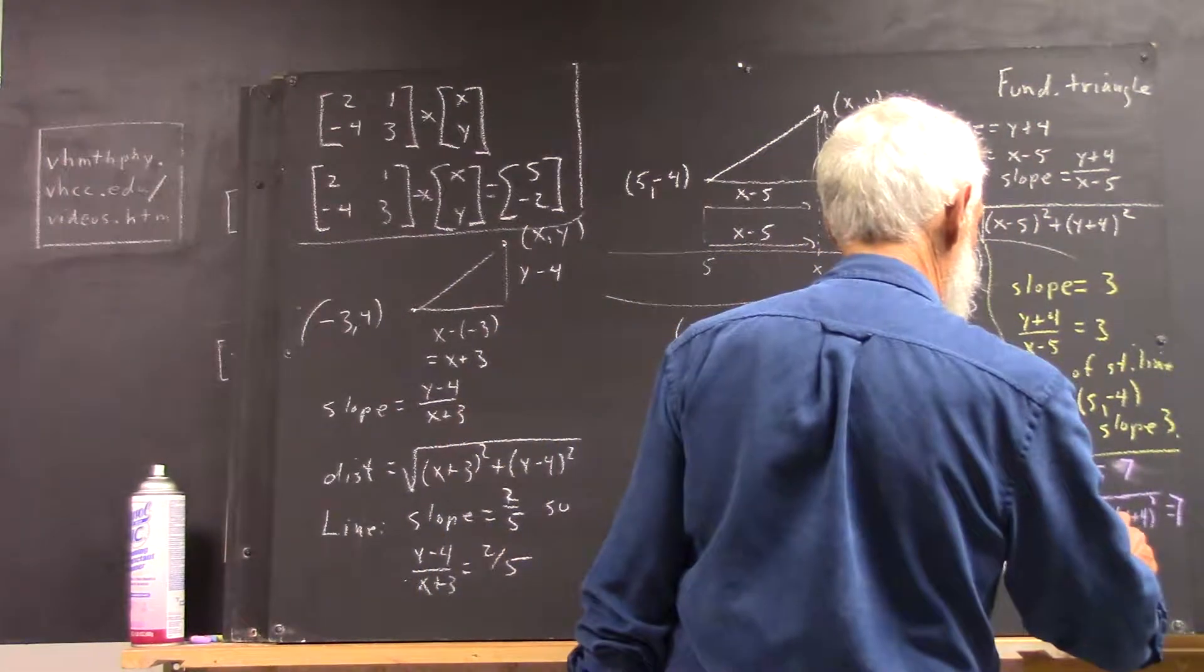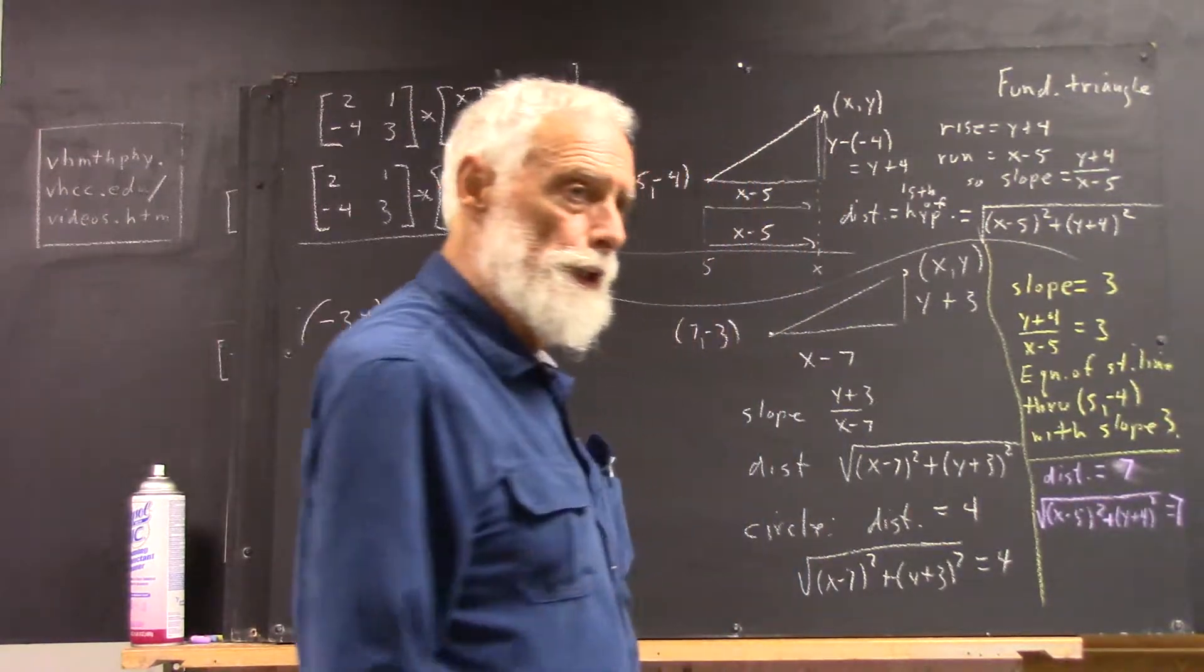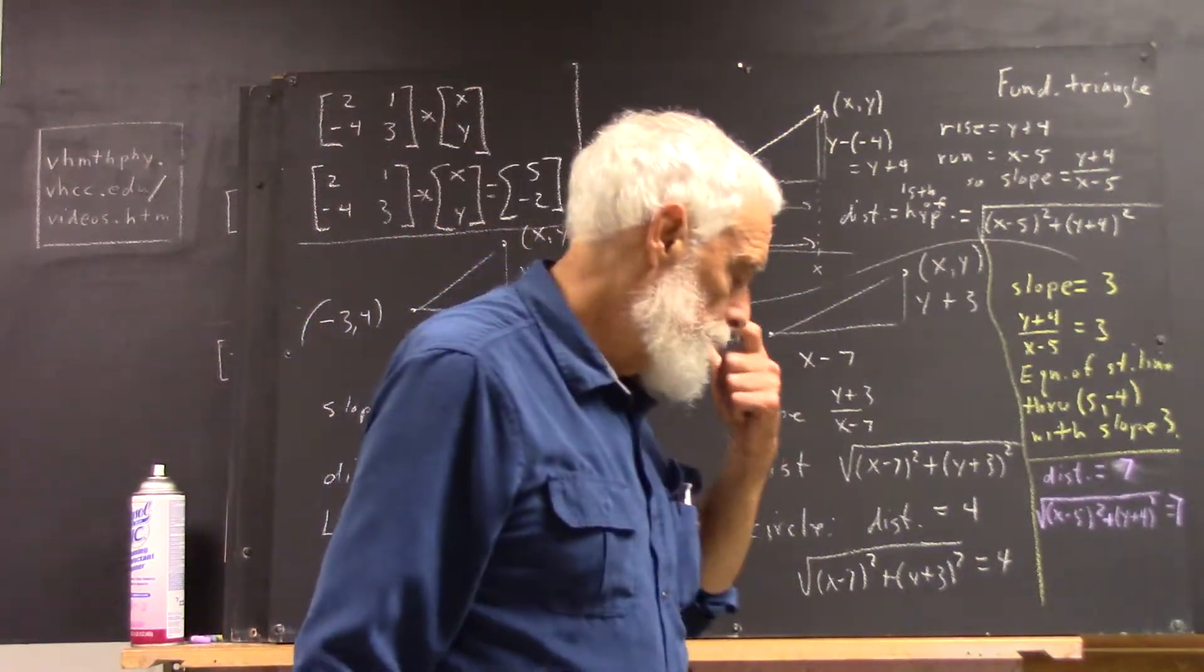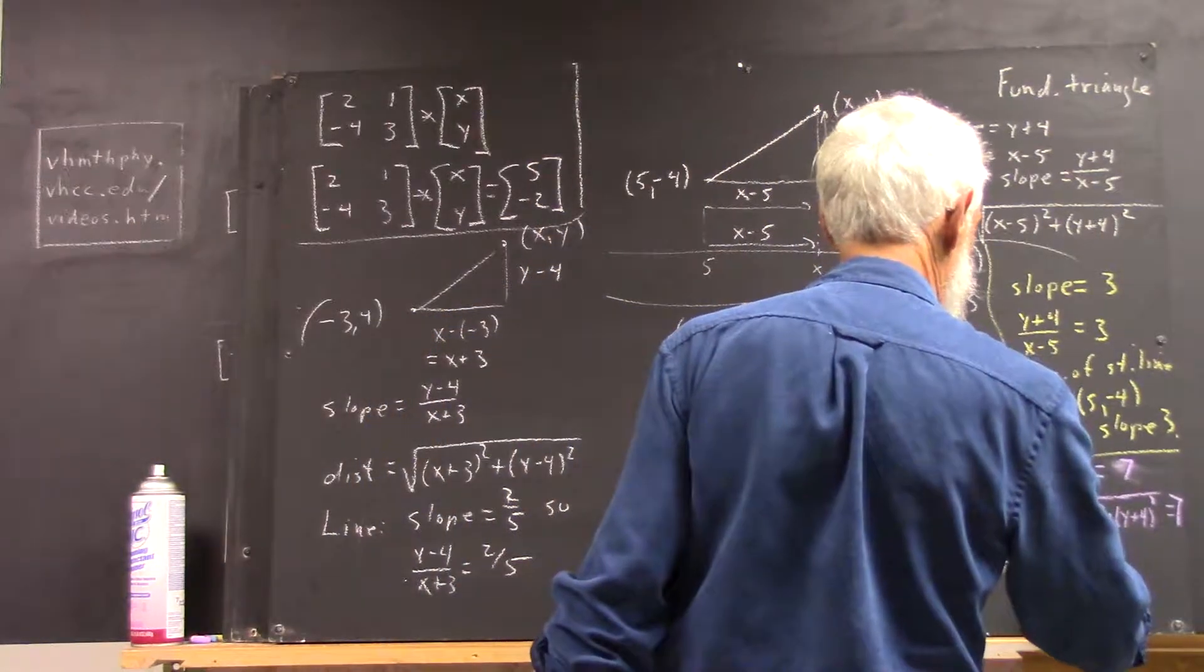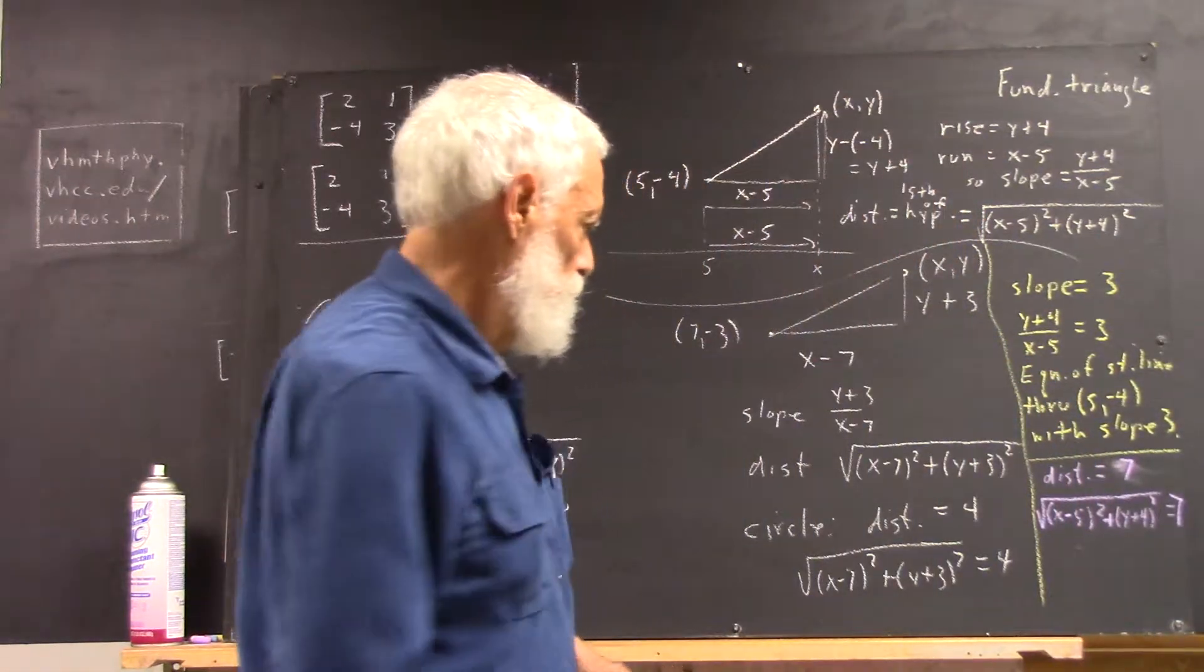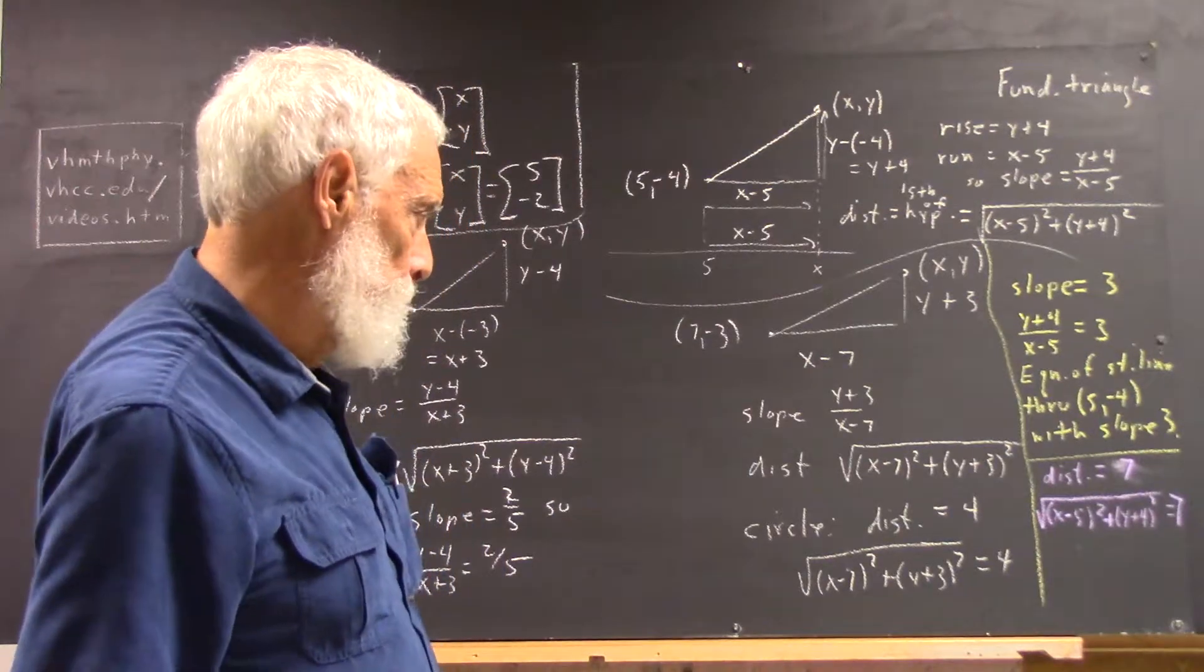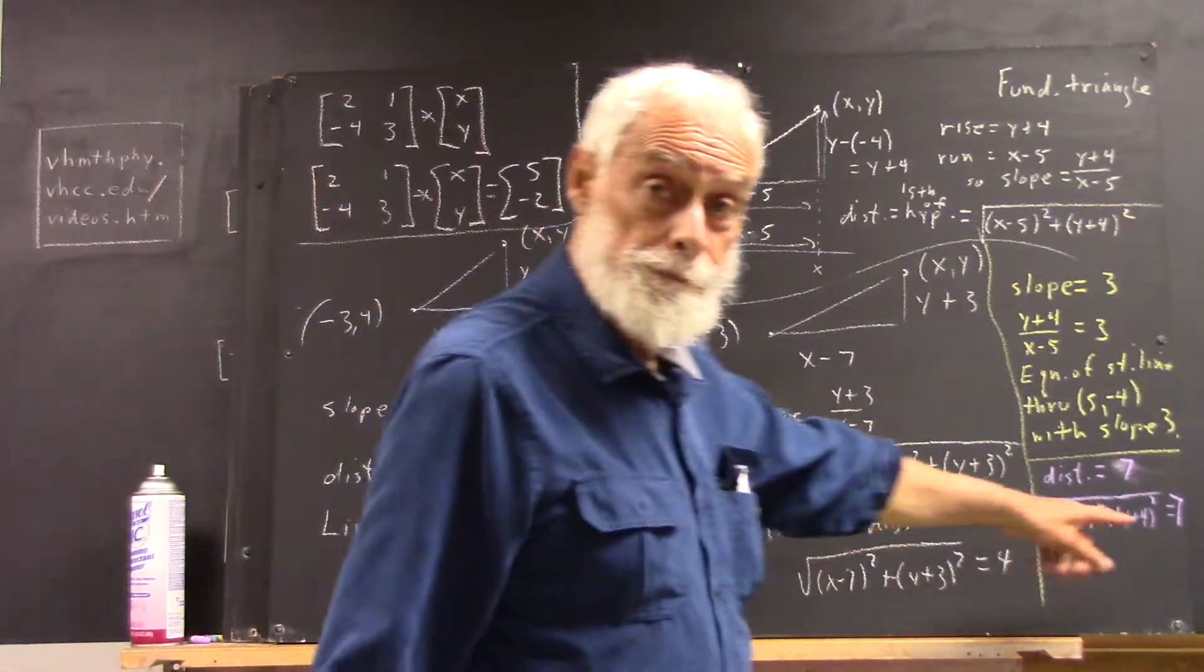So, this is the square root of x minus 5 squared plus y plus 4 squared equals 7. Now, when I ask people to write that down, about half the class did, and half the class wasn't sure what was going on, or wasn't sure what they were supposed to do. I think a lot of them had the idea that maybe you were afraid to write it down. But that's it.